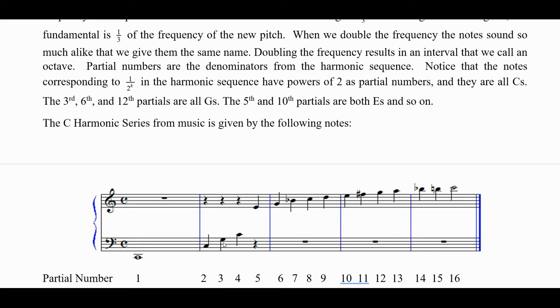The 1 at 3 is a G. We double that, so the 6th and double that again, the 12th partials are also Gs. The 5th partial is an E, and so that means the 10th partial is also an E. So the 20th would be too. And so this is a C harmonic series for music.